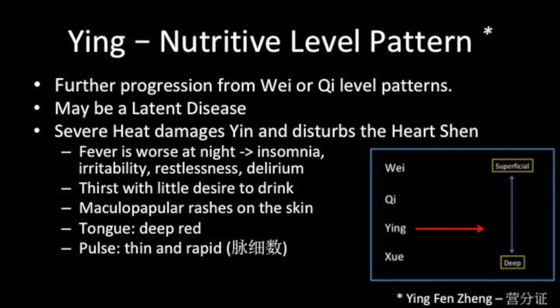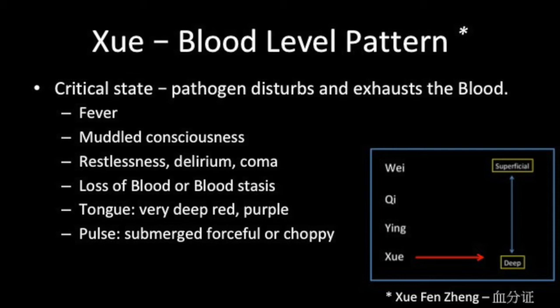The Xue or blood level is a critical state where the disease disturbs and exhausts the blood. Consciousness is now muddled. Fever provokes restlessness, delirium, and can result in coma. There can be loss of blood or blood stasis. The tongue will be a very deep red or purple color. The pulse will be submerged and forceful or choppy.